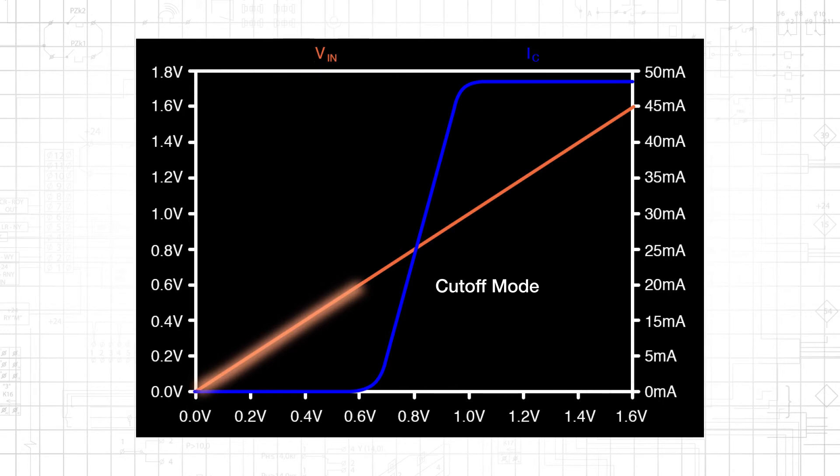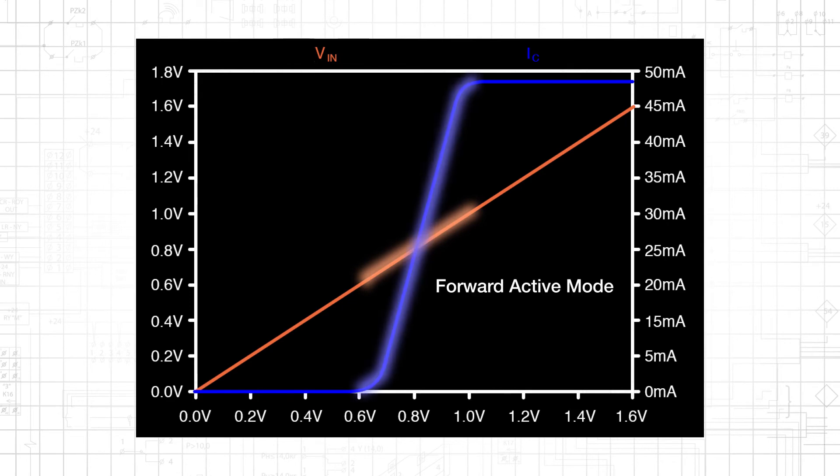As Vin increases from 0 to 0.6 volts, the collector current is extremely small. When Vin reaches approximately 0.6 volts, the transistor is in forward active mode, and collector current increases rapidly.